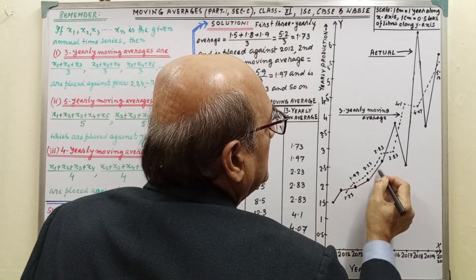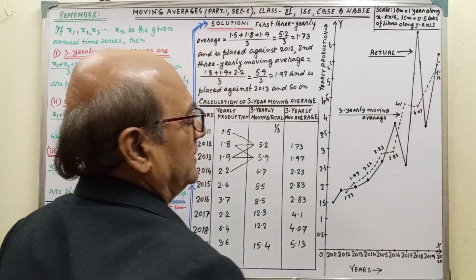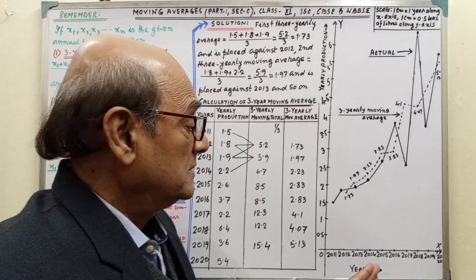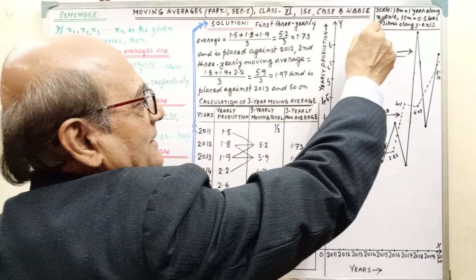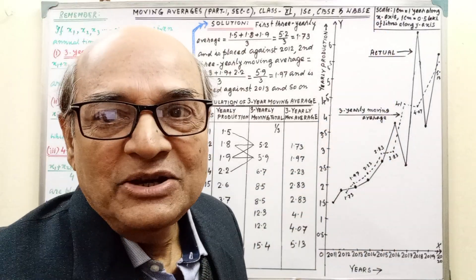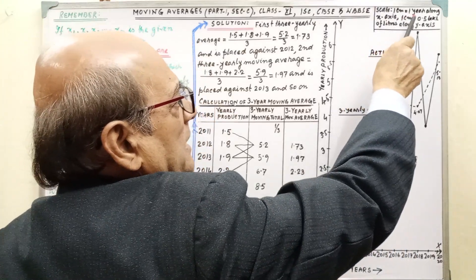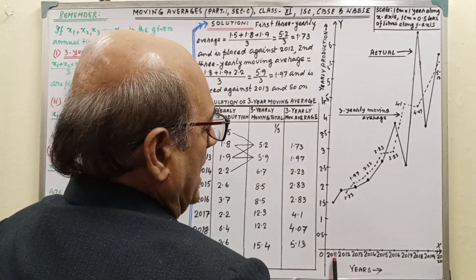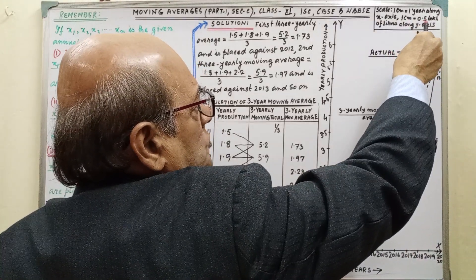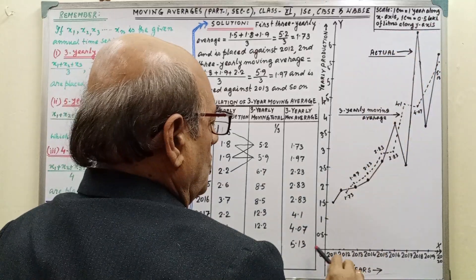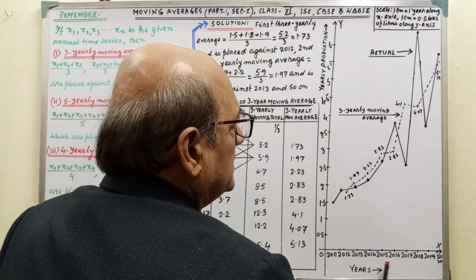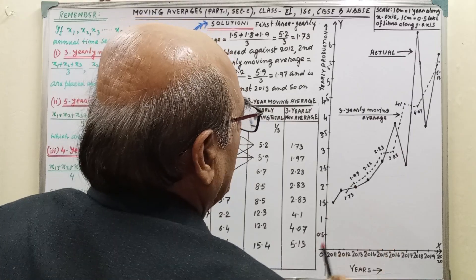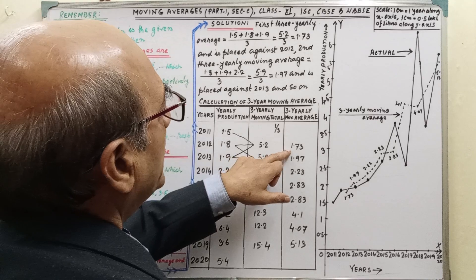In this way, we have to plot the points, yearly production and year. After plotting this, then we have to add this by using scale. This part is actual average. But one more thing regarding the scale. When you are drawing the graph, then you have to write the scale: 1 centimeter equal to 1 year along x axis, and 1 centimeter equal to 0.5 lakh of liters along y axis. This scale, you have to write clearly.